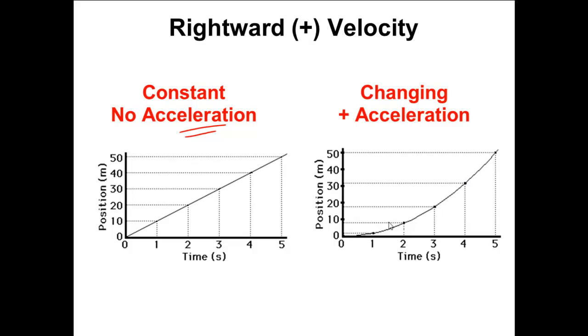Anytime I have a curved, curved line on a PT graph, it means I'm going to have an accelerating object with changing velocity. Straight line means no acceleration, just constant velocity. So constant velocity, changing velocity.